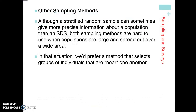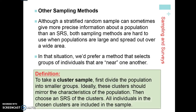Although a stratified random sample can sometimes be more precise — ensuring we have people from each strata in our sample — both sampling methods are often hard when populations are large or spread out over a wide area. In that situation, we prefer a method that selects groups of individuals that are near each other. The next method is a cluster sample. A cluster sample divides the population into groups; the clusters mirror the characteristics of the population. Then you choose a simple random sample of the clusters, and all individuals in the chosen cluster are included in the sample.